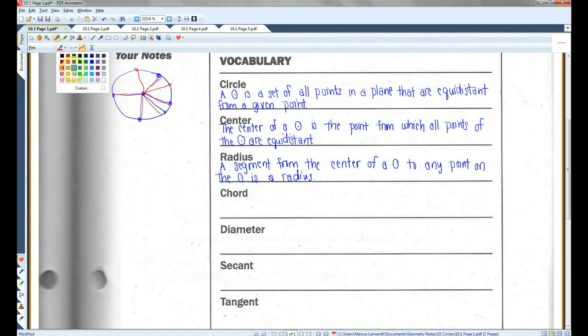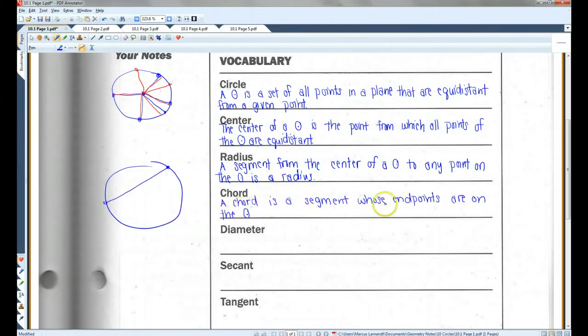Now, a chord is a little bit different. A chord is a segment whose endpoints are on the circle. So for example, this would be a chord. It doesn't necessarily go through the center. It could just be off to the side somewhere. Here's another chord. Those are chords.